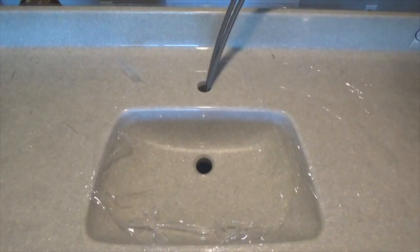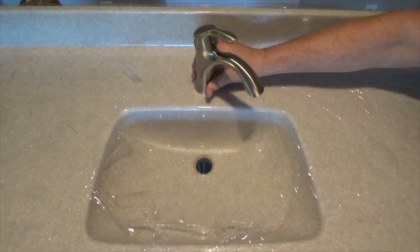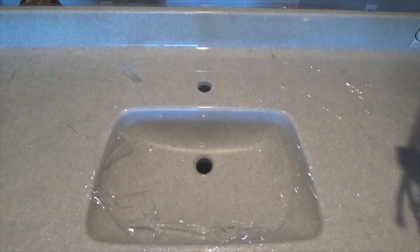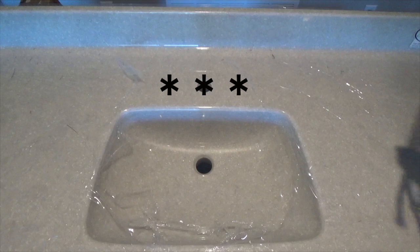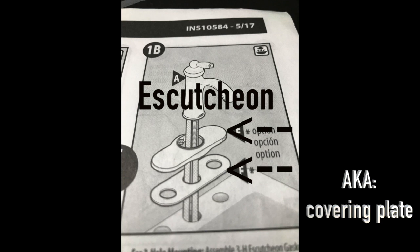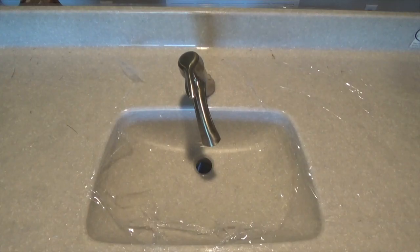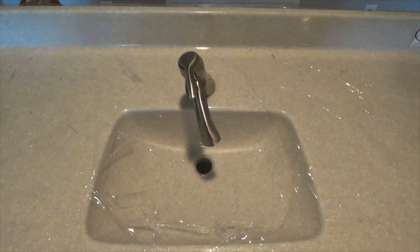Next, thread the faucet lines through the mounting hole in the sink top. However, if your sink has three holes, then the escutcheon will need to be installed first, as in the following diagram. Since this top was custom-made, I had only one hole drilled.